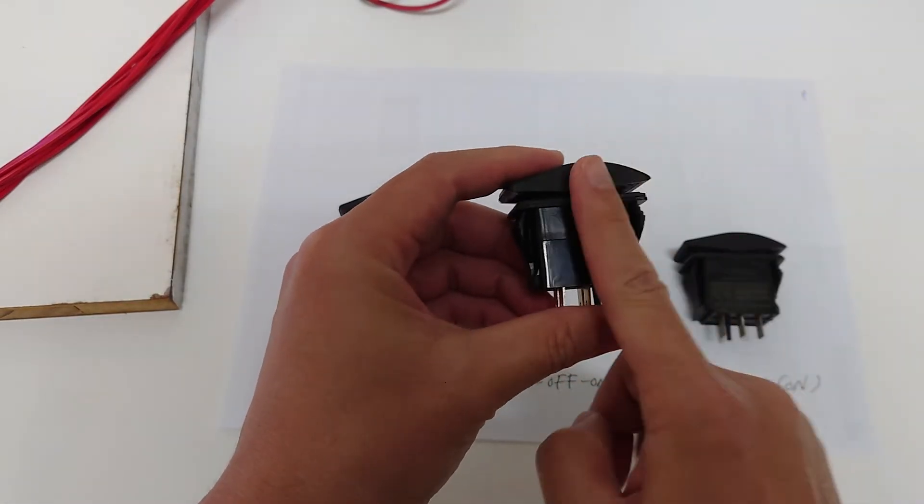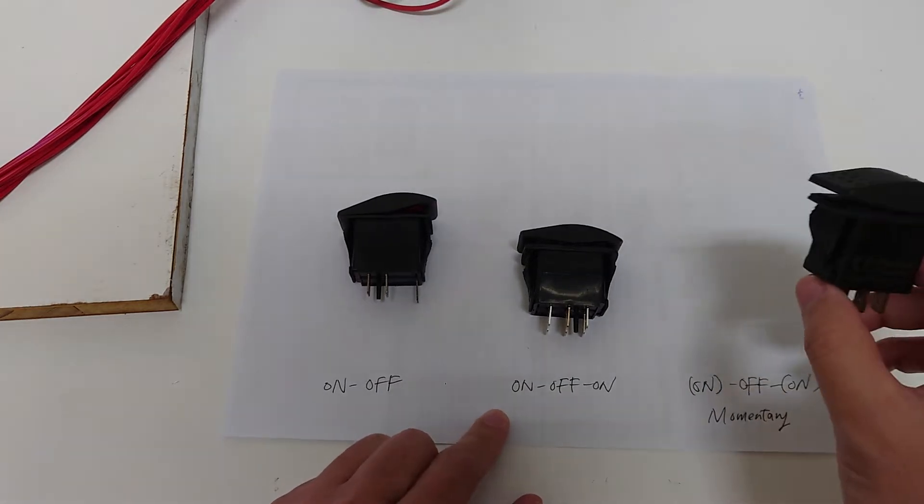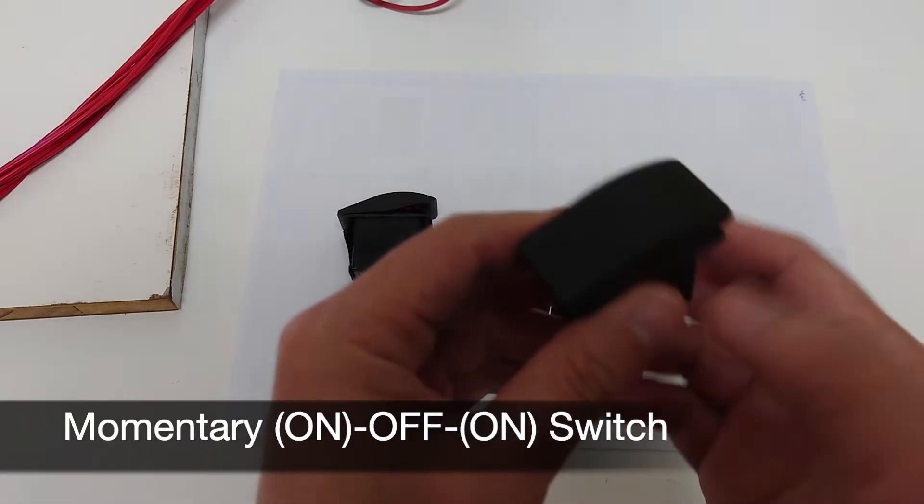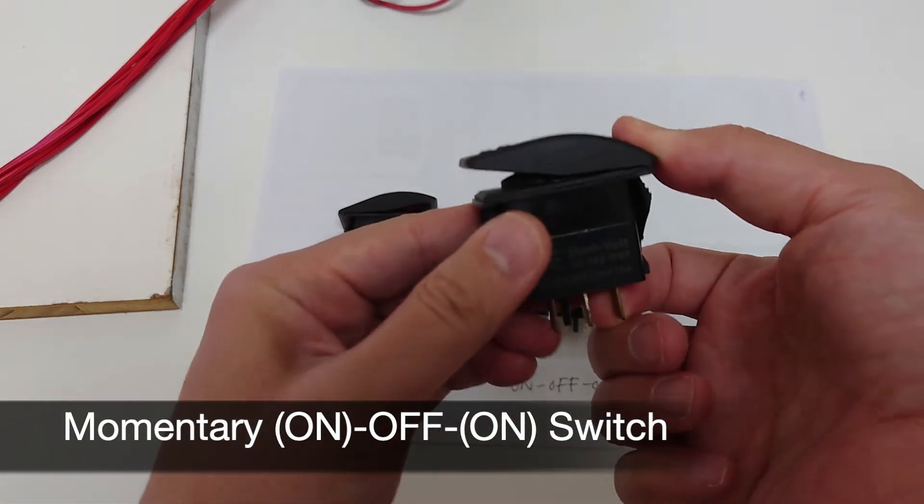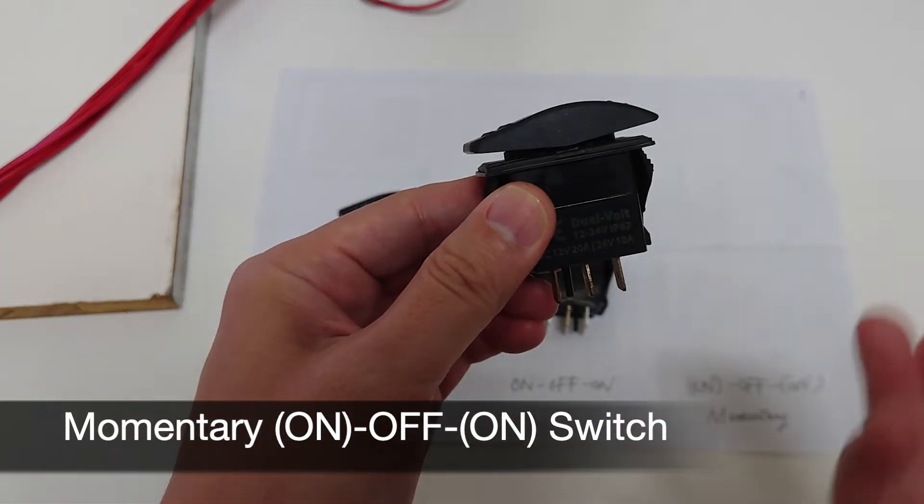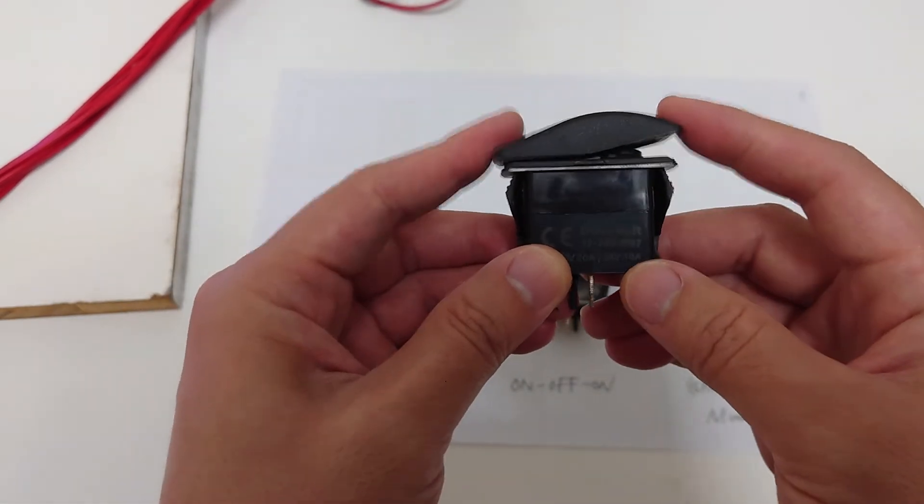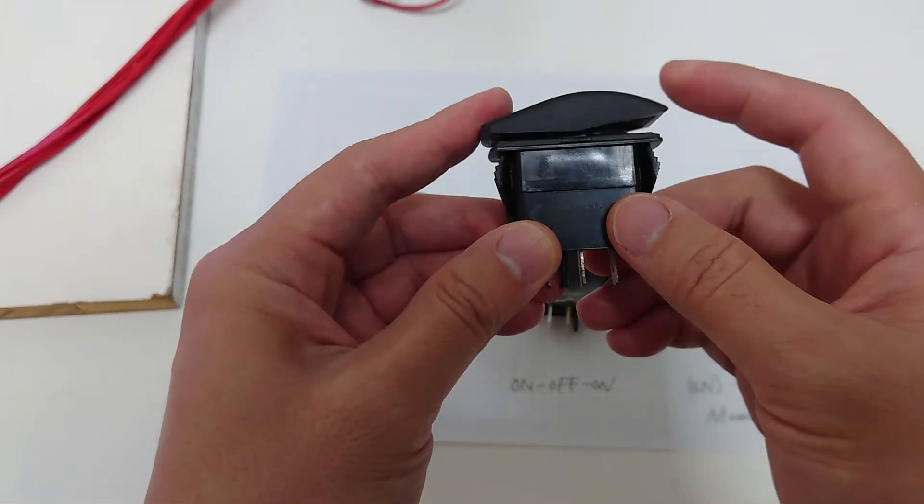Off is in the middle. This one is the momentary version - when you press the switch it's on, and when you release it automatically returns to its original state. This is double momentary, momentary on either side.